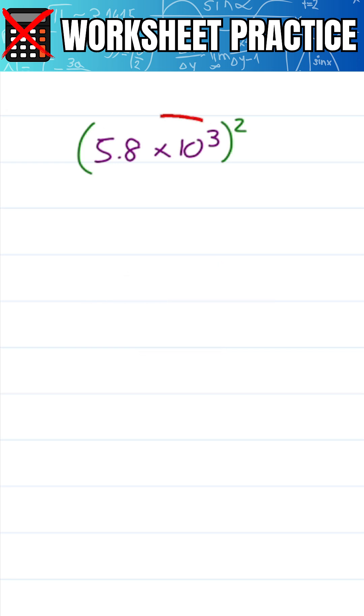When you're raising a number in scientific notation to a power, you have to distribute that power. That's 5.8 squared and 10 to the third squared.